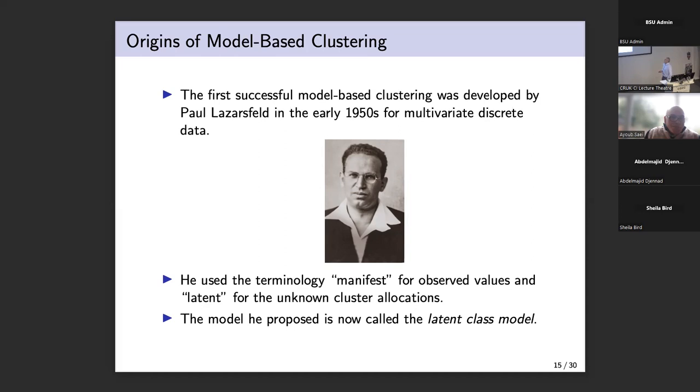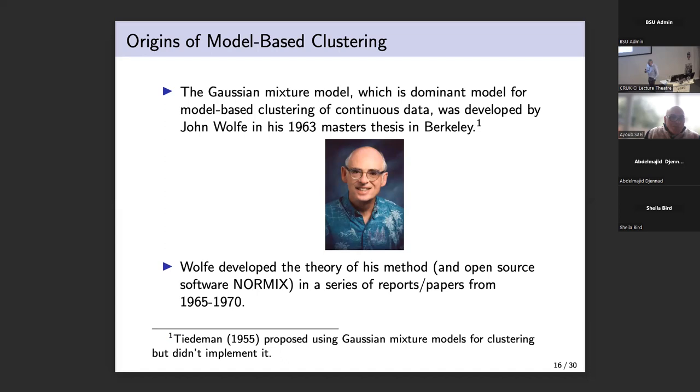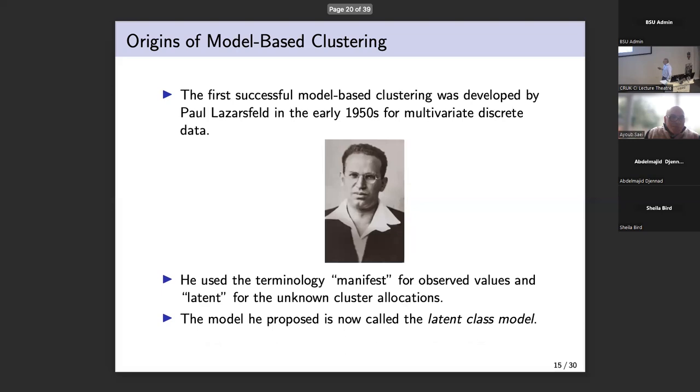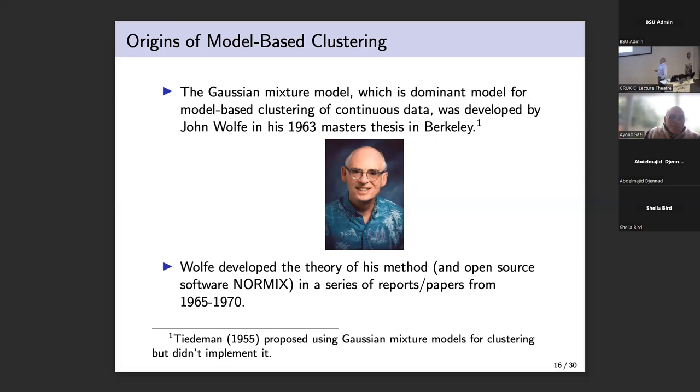Quite often, people are clustering continuous data, and the first successful approach for doing model based clustering for continuous data was by Wolf, John Wolf, and it was actually in his master's thesis in Berkeley in the 1960s. And his work is clearly very inspired by what Paul Lazarsfeld did. He actually attended a course that Lazarsfeld gave in Berkeley while he was a student there. And he used a multivariate Gaussian mixture model for doing model based clustering. It's also worth mentioning that Wolf had open source software called Normix that he made available even as early as the 1960s and early 70s for doing this model based clustering.